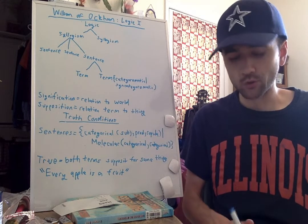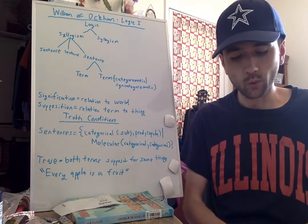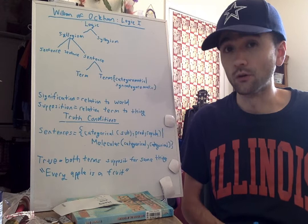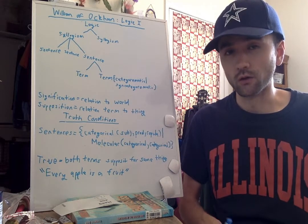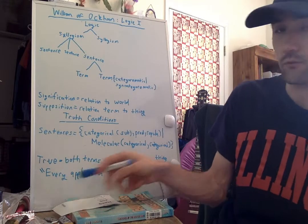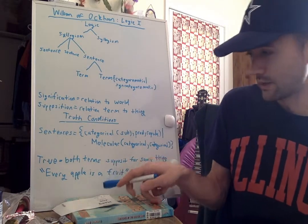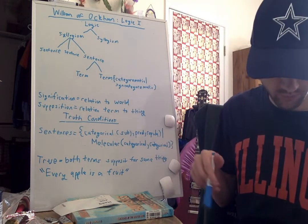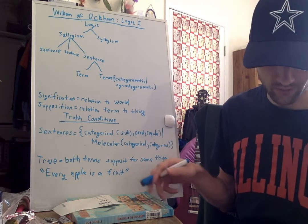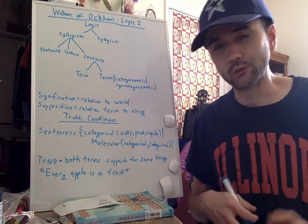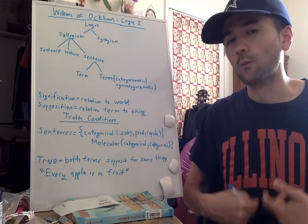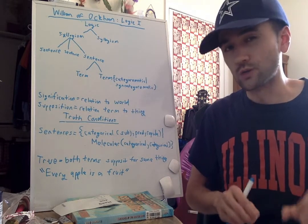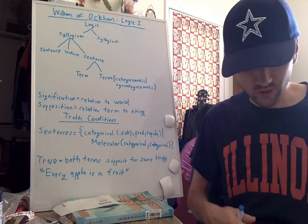The statement is true if both terms supposit for the same thing. You can even have more complicated statements evaluated along these criteria. For example, 'every apple is a fruit' - you have that as true if the predicate supposits for everything that the subject does. You arrive at truth even with statements expressed with a quantifier like 'every' or 'some,' depending on whether the supposition satisfies the truth conditions.